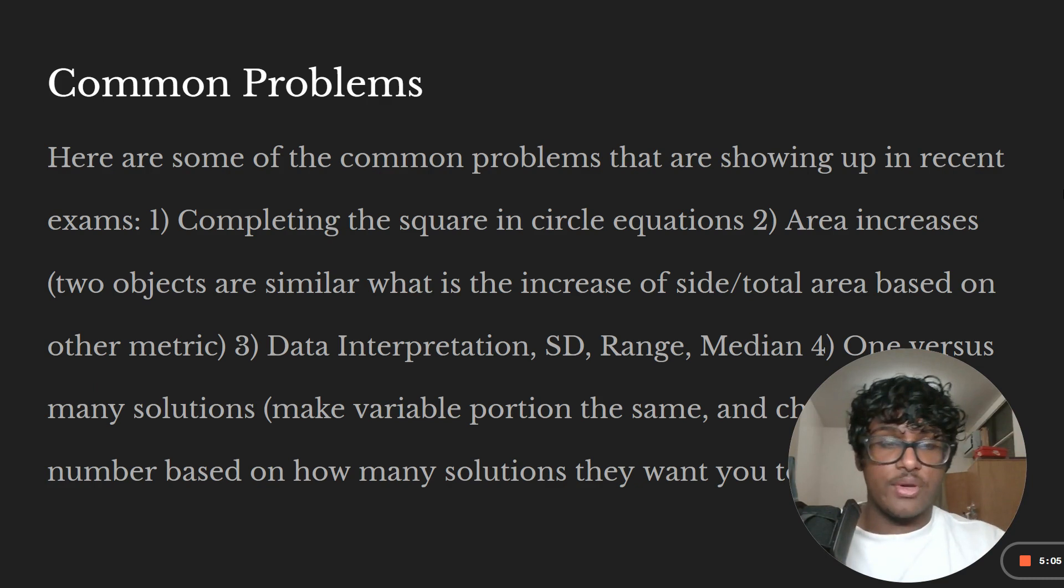The second one is your area increases. So two objects are going to be similar, or one object is like three times the area of another, find out some side length of the other object. You just need to have a good understanding of similar objects. So if you have like volume and then you have a cube that's like three times the volume, like what if every side changes by a certain metric, what does every side change by? Well, essentially that metric, you can just multiply it to every single side.